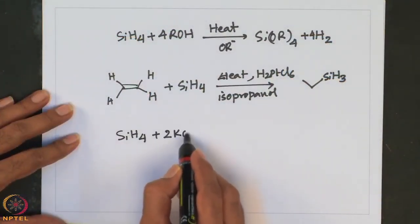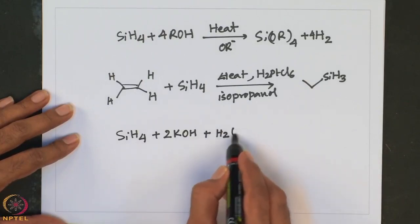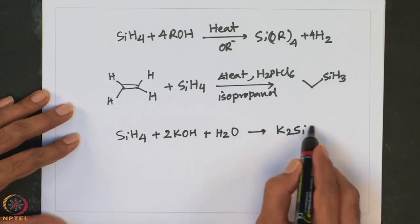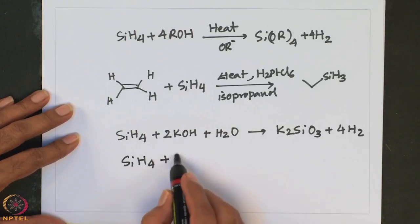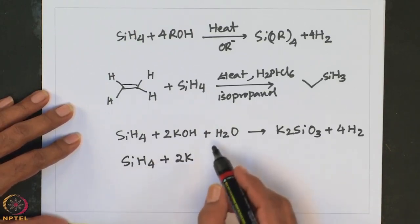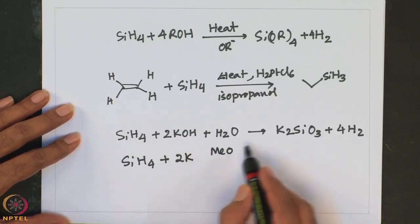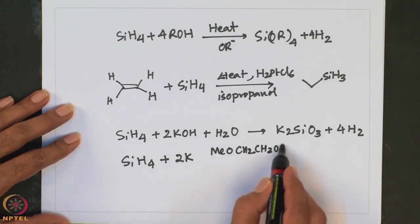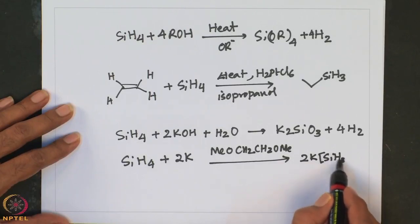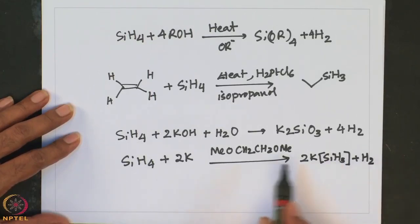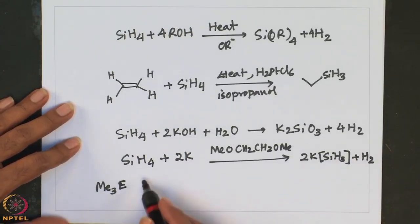Silane is a colorless gas which is insoluble in water. It can rapidly react with alkalis to form compounds of this type. For example, treated with KOH plus H2O it gives K2SiO3 plus 4H2. On the other hand, reaction of silane with alkali metals such as potassium in ether forms a compound of this type.